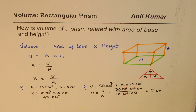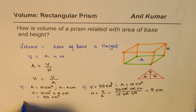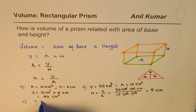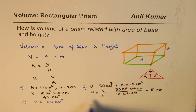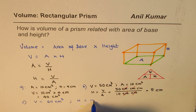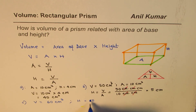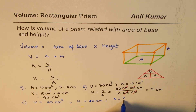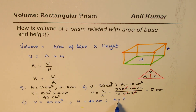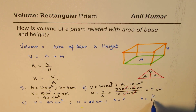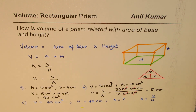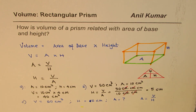Here is a question for you — Question C. Volume is 60 cm³ and height is 5 cm. You need to find the area. The formula is: area equals volume divided by height. Divide 60 cm³ by 5 cm to get the answer. You can solve and write your answer; I'll provide it in the comments. I'm Anil Kumar — please share and subscribe. Thank you and all the best!